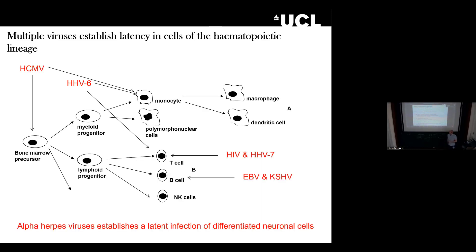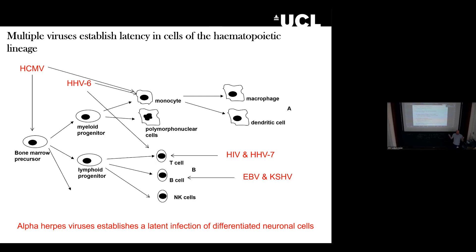To study the molecular biology of herpes virus latency, we need to understand what cell types are involved. Most herpes viruses are latent in cells of our blood system. Human cytomegalovirus is latent in bone marrow precursor cells and the monocyte population. The gamma herpes viruses are latent in B cells. HIV — not a herpes virus — is latent in T cells. The exception is the alpha herpes viruses, which are latent in differentiated neuronal cells.